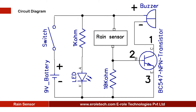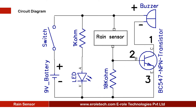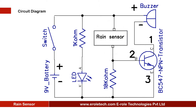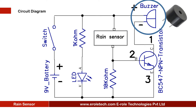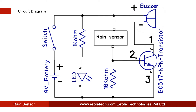This 10 Kilo Ohm resistor will connect the transistor to the ground when no rain is detected. This rain sensor will connect the transistor with a positive supply when it senses the rain. This is the symbol of a buzzer — the buzzer will beep when the circuit senses the rain.